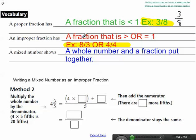Improper fraction would be something that has a fraction that is greater or equal to 1. So 8 over 3 means that my numerator is bigger than my denominator. So this is an improper fraction.